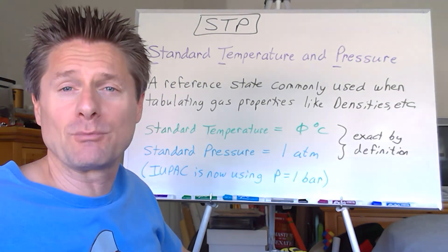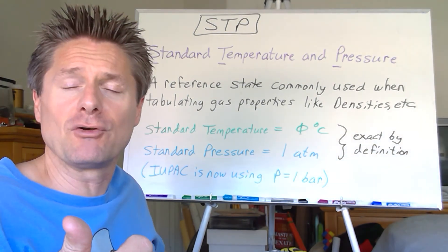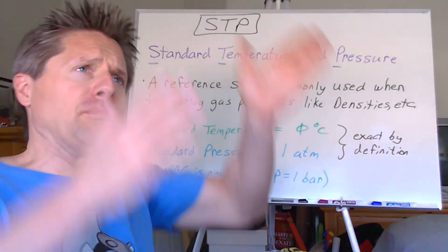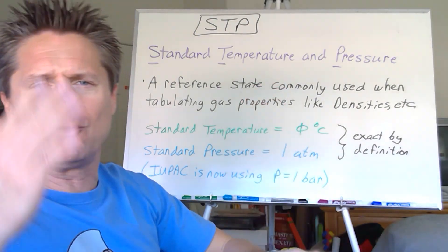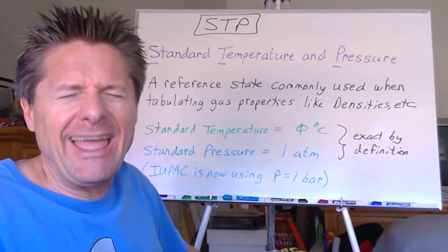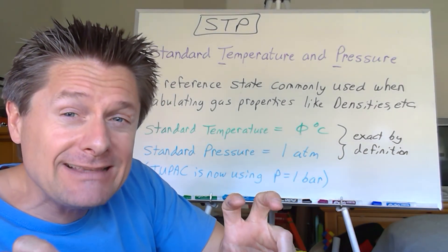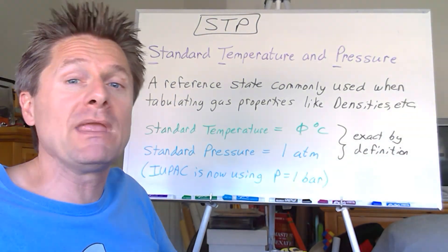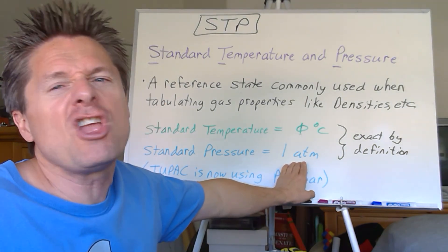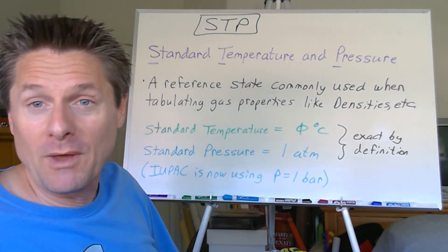These are exact by definition. So if I give you an ideal gas equation problem at STP conditions, I just gave you the temperature of zero degrees Celsius, which is exact, and a pressure of one atmosphere, which is exact. But the International Union of Pure and Applied Chemistry is trying to change all of the stuff we've been doing for so long. They want us to go, standard pressure is now one bar. Most of us just ignore that.